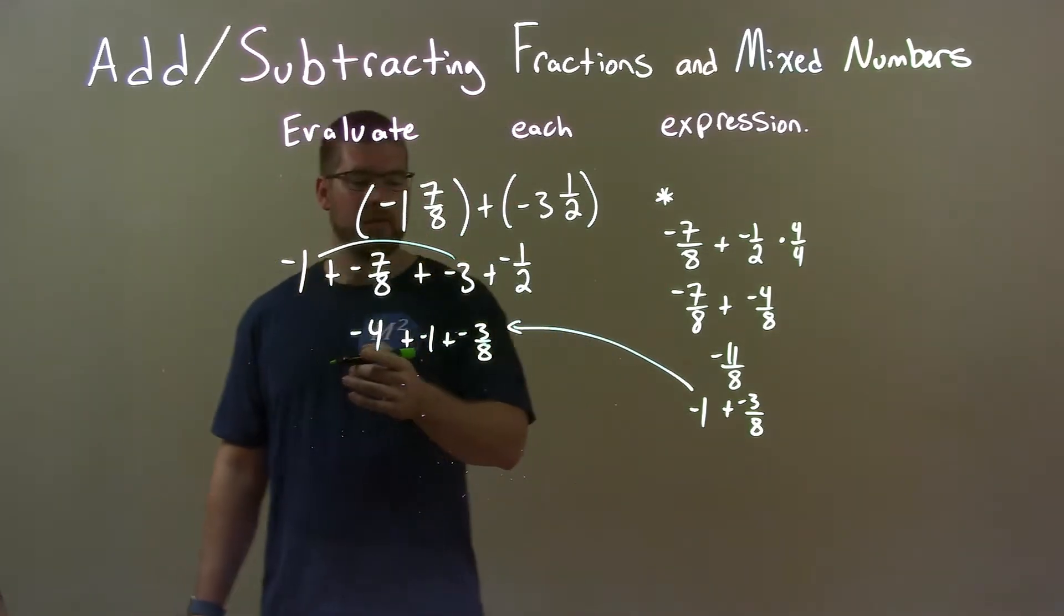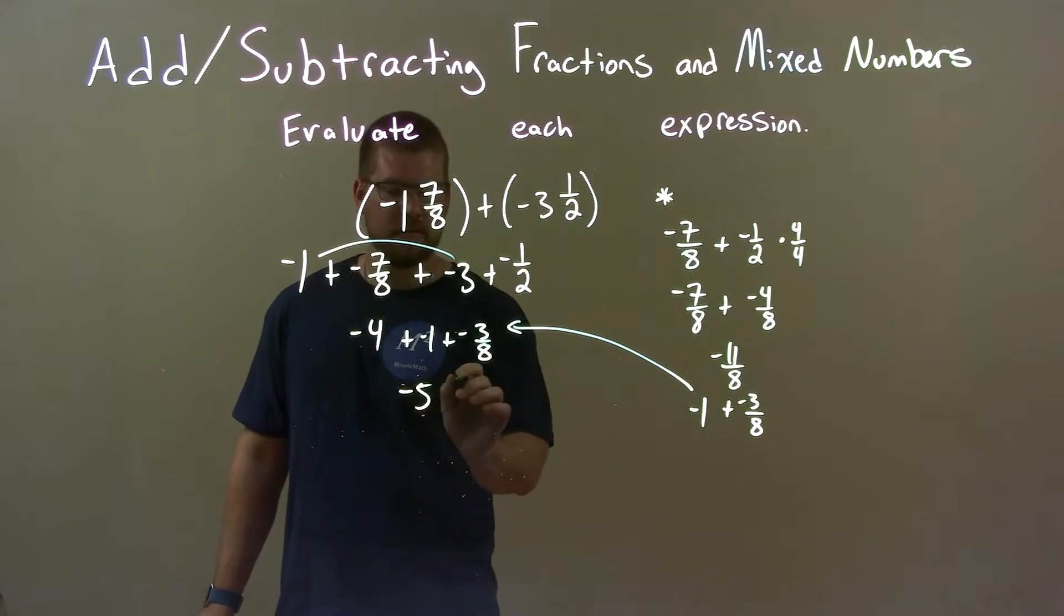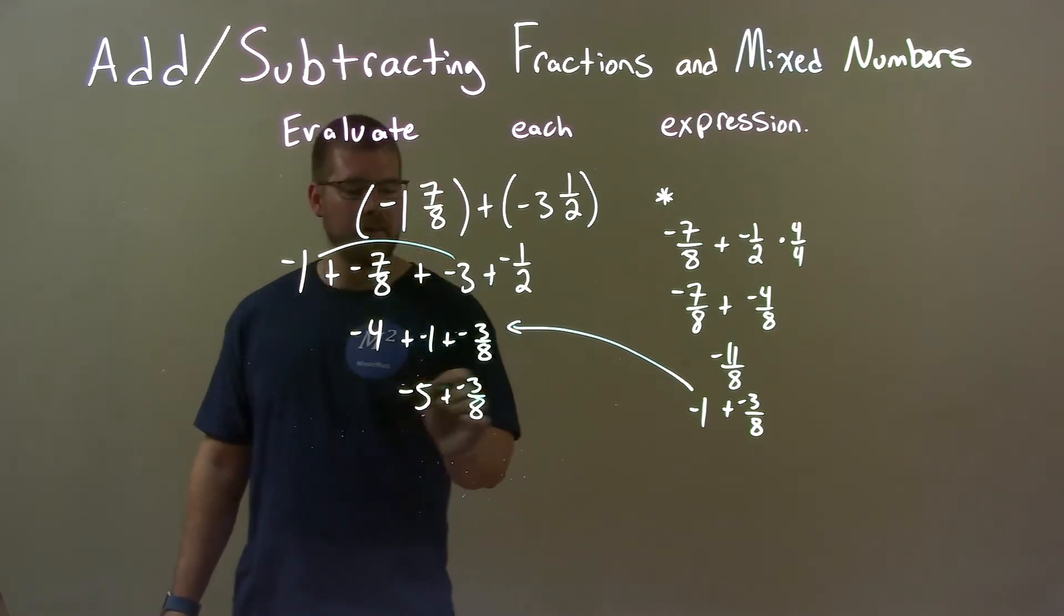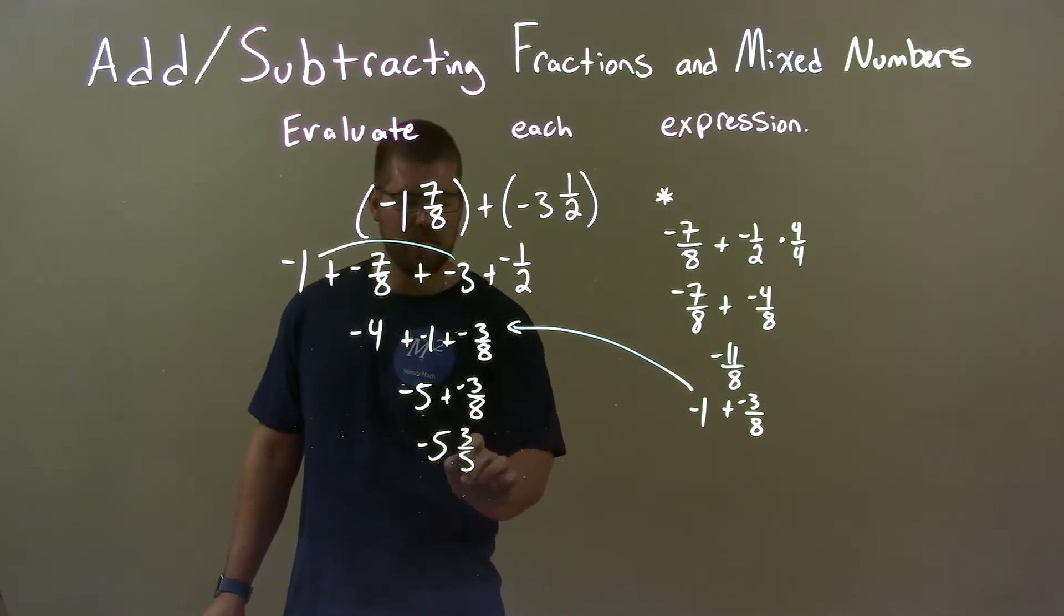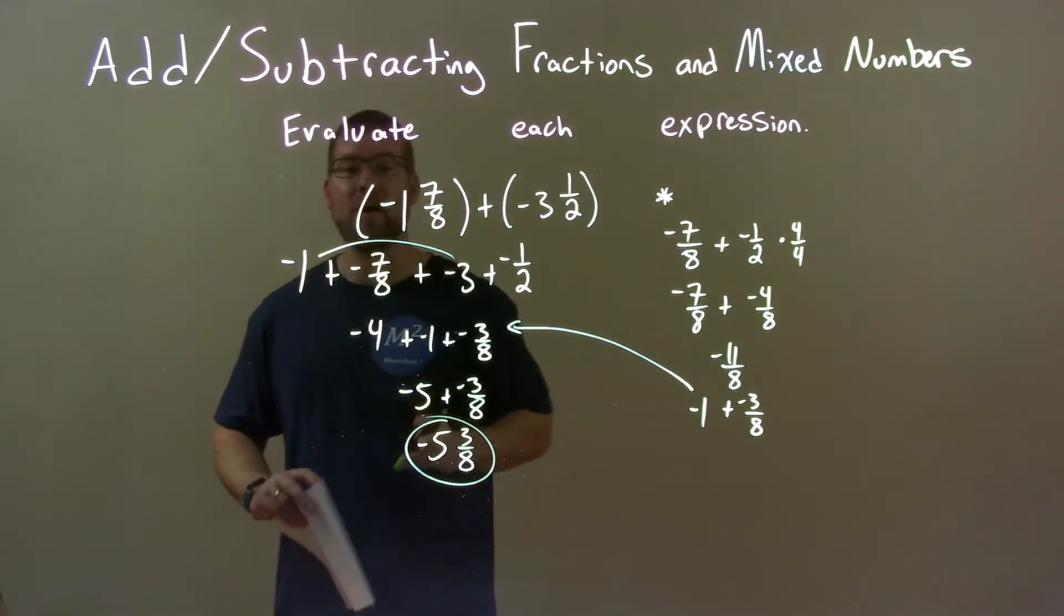Well, the negative 4 that we've shown plus a negative 1 is a negative 5. And then we can bring down the negative 3 eighths here. Now, we can combine these two to be one fraction. So, negative 5 and 3 eighths here. And there we have our final answer.